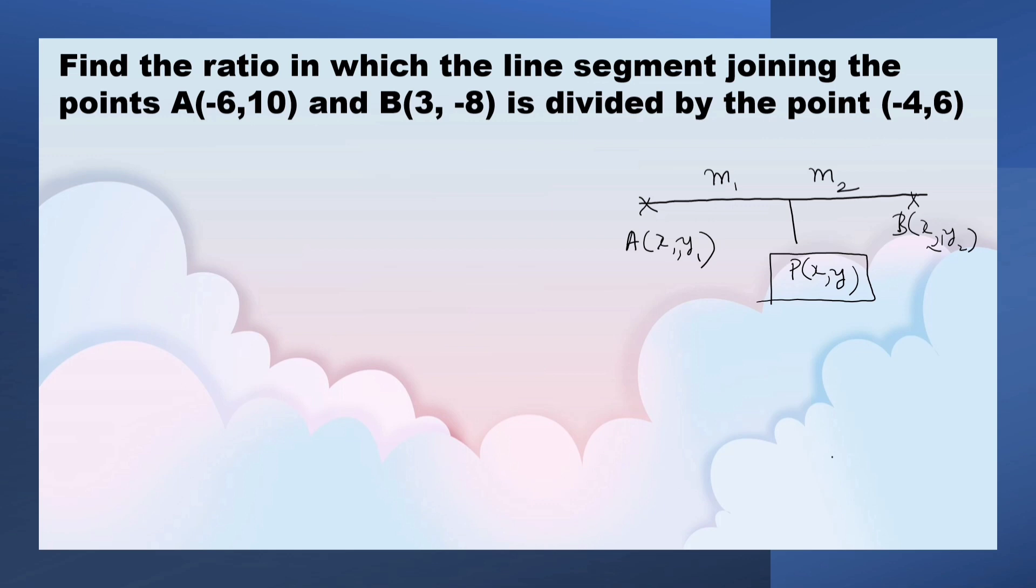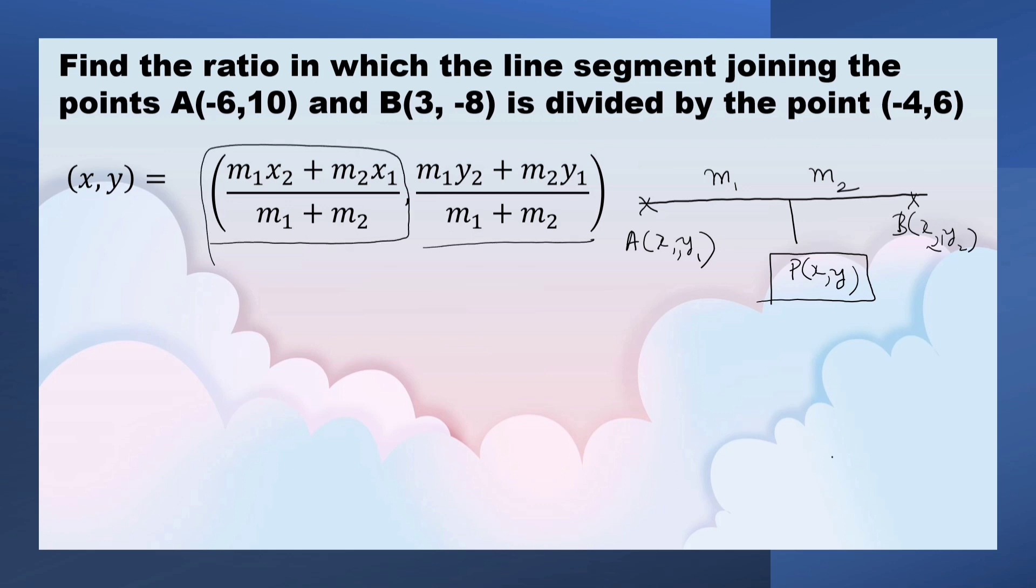Section formula is XY is equal to M1X2 plus M2X1 upon M1 plus M2, M1Y2 plus M2Y1 upon M1 plus M2. So, this is the X coordinate and this is the Y coordinate.